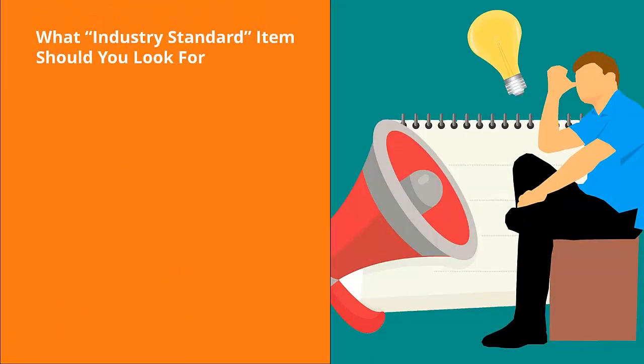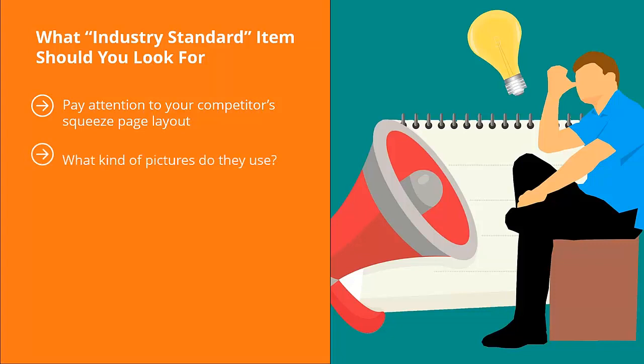What industry standard items should you look for? Pay attention to your competitor's squeeze page layout — the sign-up page they use to get target audience members to join their mailing list. Note how they lay out these pages: what pictures they use, what text they present, how they format it, whether they tell stories or show videos. Next, pay attention to their sales funnel layout — the standard way competitors get people to sign up to their mailing list and then sell those list members a wide range of products and services.